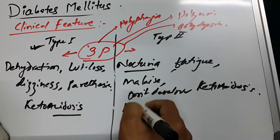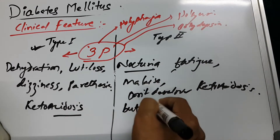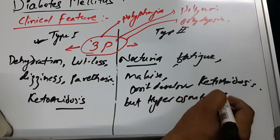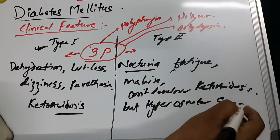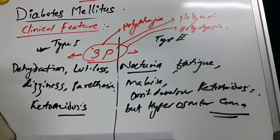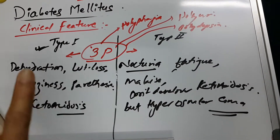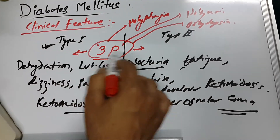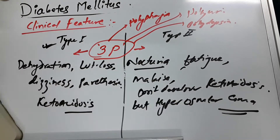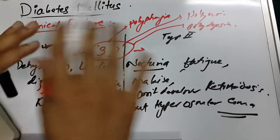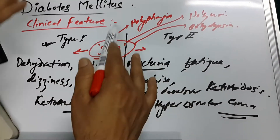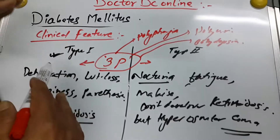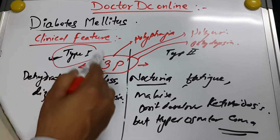In Type 2, however, hyperosmolar coma may be present. So in the clinical features, consistent with the pathophysiology, the most important thing to remember for both Type 1 and Type 2 diabetes mellitus is the 3P: polyphagia, polyuria, and polydipsia.